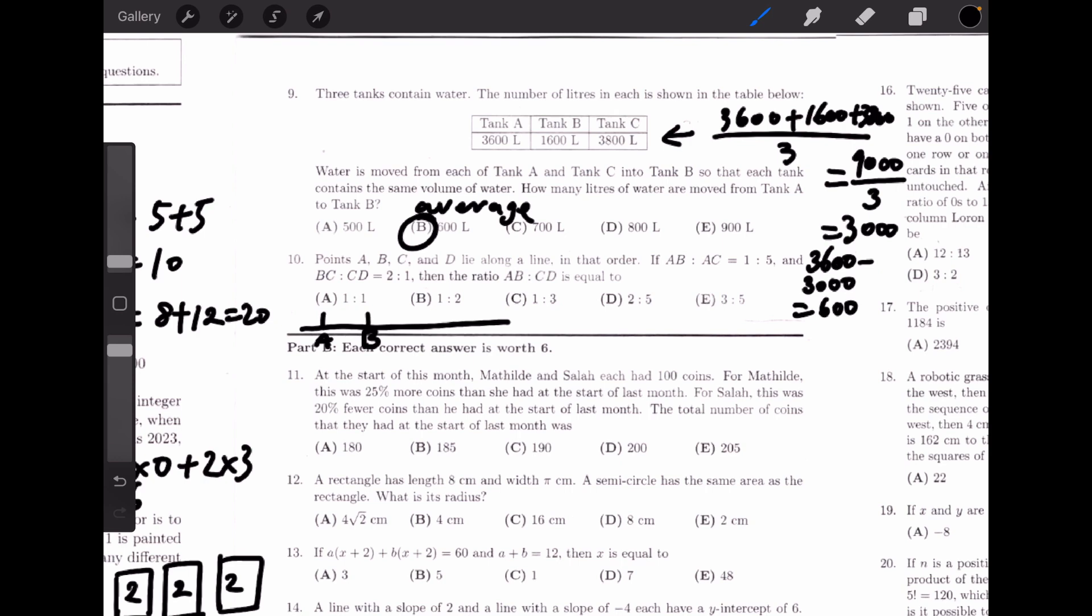Because BC to CD is 2 to 1, if BC is 4 in this case, then CD would be 2. And AB to CD would be 1 to 2, which is B.